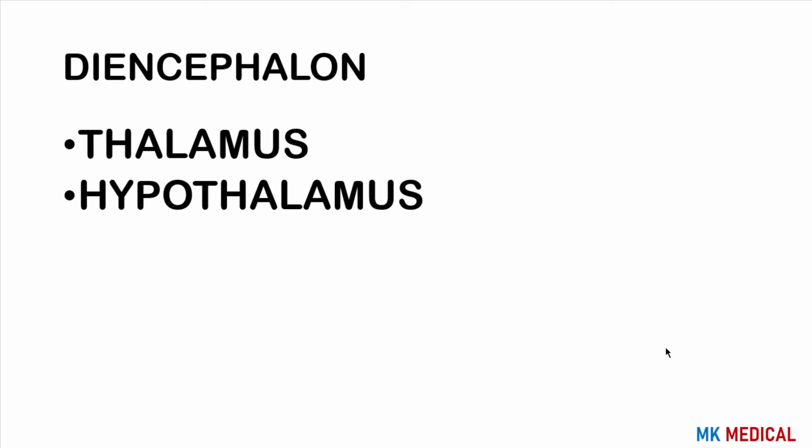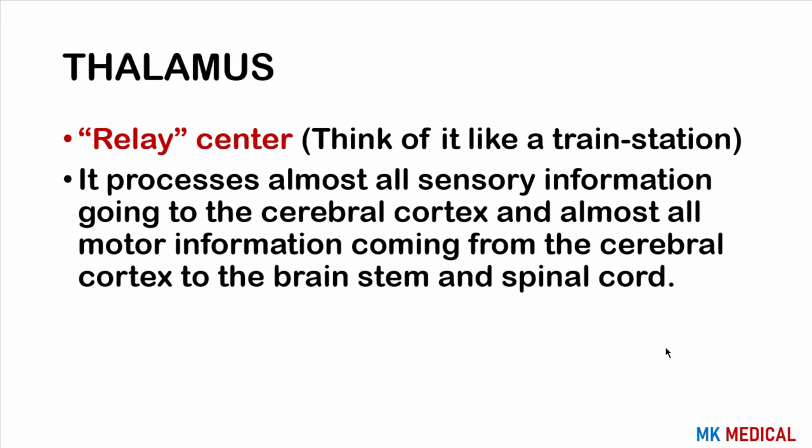Moving on to the diencephalon, we discuss two predominant structures: the thalamus and the hypothalamus. The thalamus is a relay center — like a train station — processing all sensory information going to the cerebral cortex, and almost all motor information coming from the cerebral cortex passes through the thalamus. It is a key center relaying both sensory and motor information.